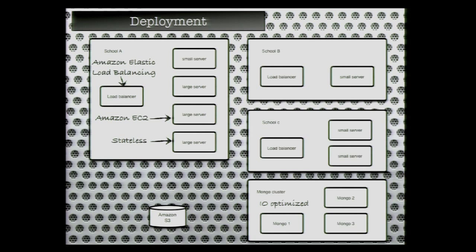The first thing each school cluster has is a load balancer hosted by Amazon. Behind that load balancer we have several servers depending on how many students are active at that school. To make sure this keeps on working, we make sure that all the instances are stateless — all the code we write is stateless. Of course it doesn't mean we don't store data, but all the data we store is either going into a Mongo database or if it's temporal data, into memcache. The instance itself and the OSGI services are basically stateless. On the other hand, we use a Mongo cluster, which is just optimized to do high I/O performance. All the school clusters are using the same Mongo cluster.